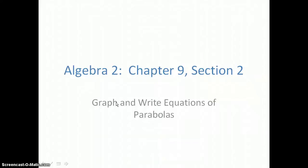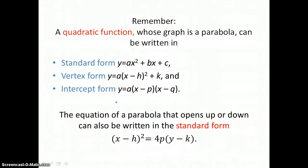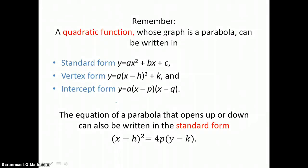In Lesson 9.2, you will graph and write equations of parabolas. Remember that a quadratic function whose graph is a parabola can be written in standard form: y equals ax squared plus bx plus c; vertex form: y equals a times the quantity x minus h squared plus k; and intercept form: y equals a times the quantity x minus p times the quantity x minus q. The equation of a parabola that opens up or down can also be written in standard form.